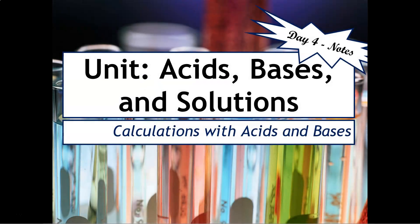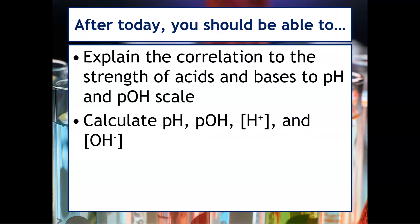In our last video, we focused primarily on the qualitative properties of acids and bases. Now we'll talk more quantitatively by doing some calculations with acids and bases. You'll want to make sure that you have your calculator handy. After today, you should be able to explain the correlation of the strength of acids and bases to the pH and pOH scale, and calculate pH, pOH, the H plus ion concentration, and the OH minus concentration.